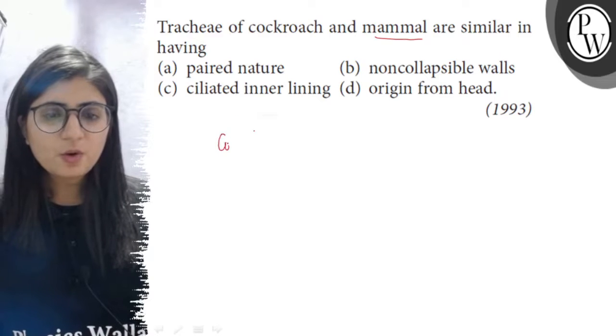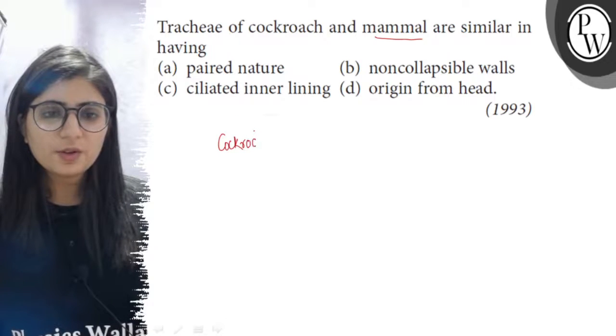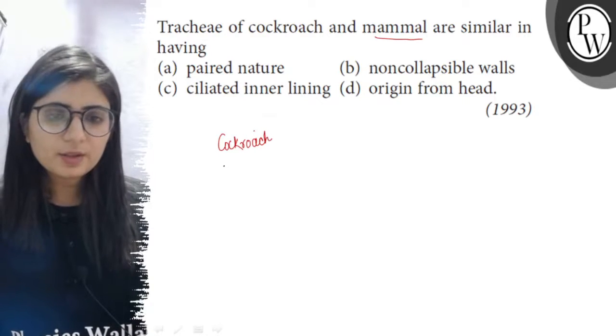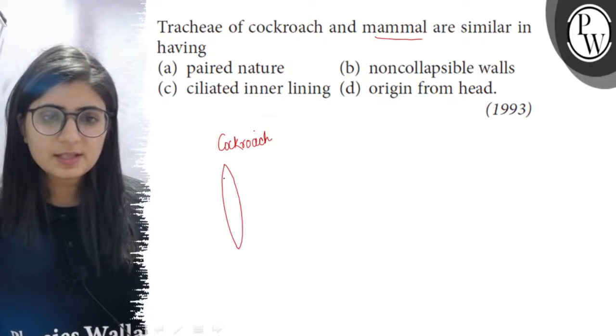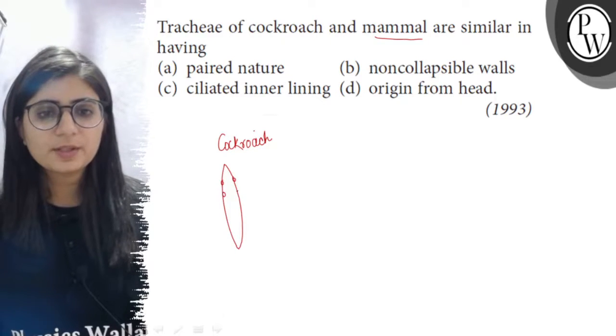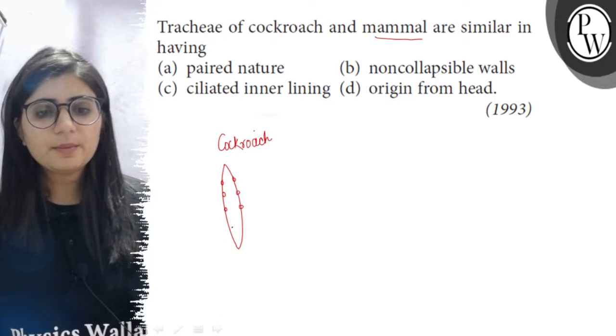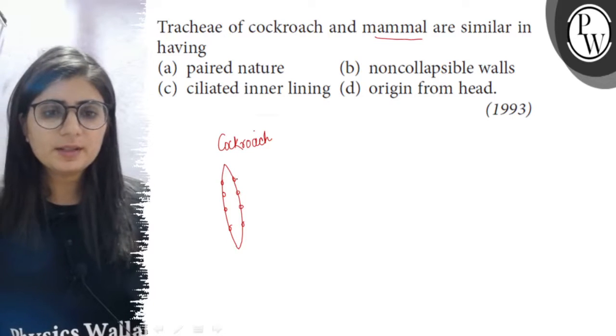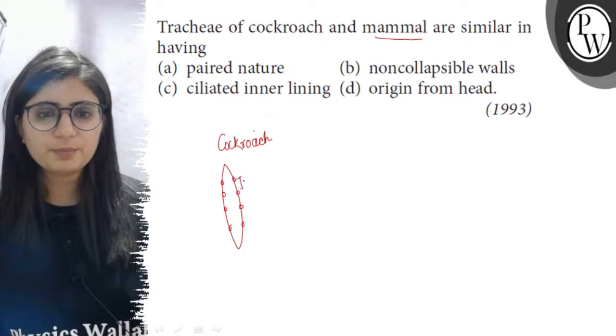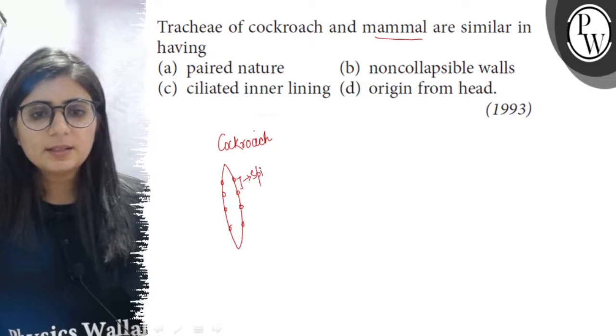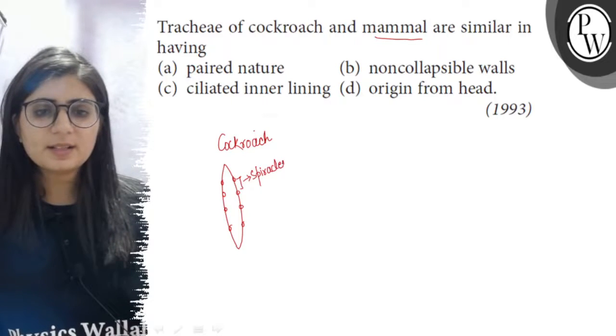In case of cockroach, on their body on the lateral side there are pores. There are lateral pores present over the body, 10 pairs of pores are there, and these 10 pairs of holes are known as the spiracles.